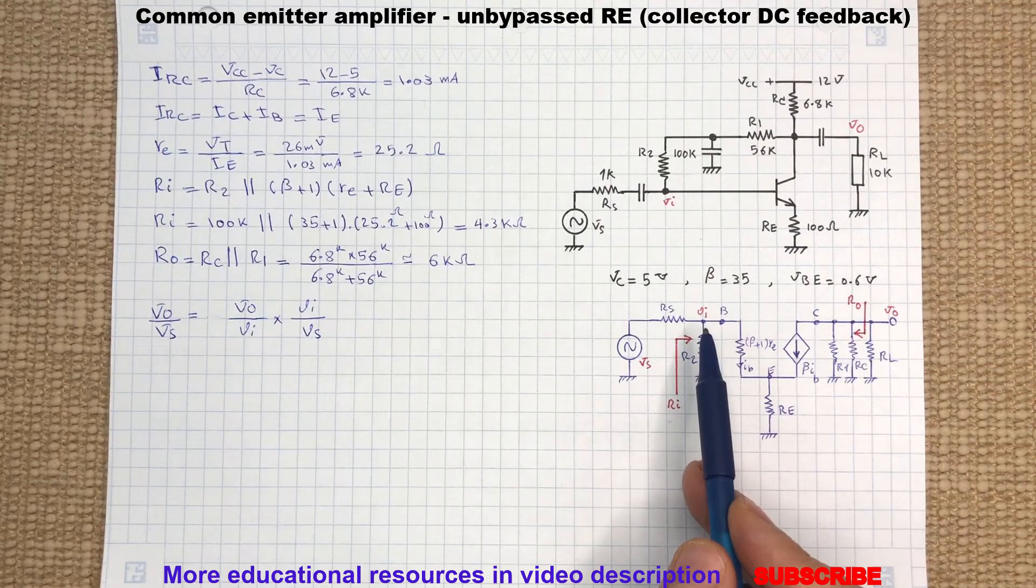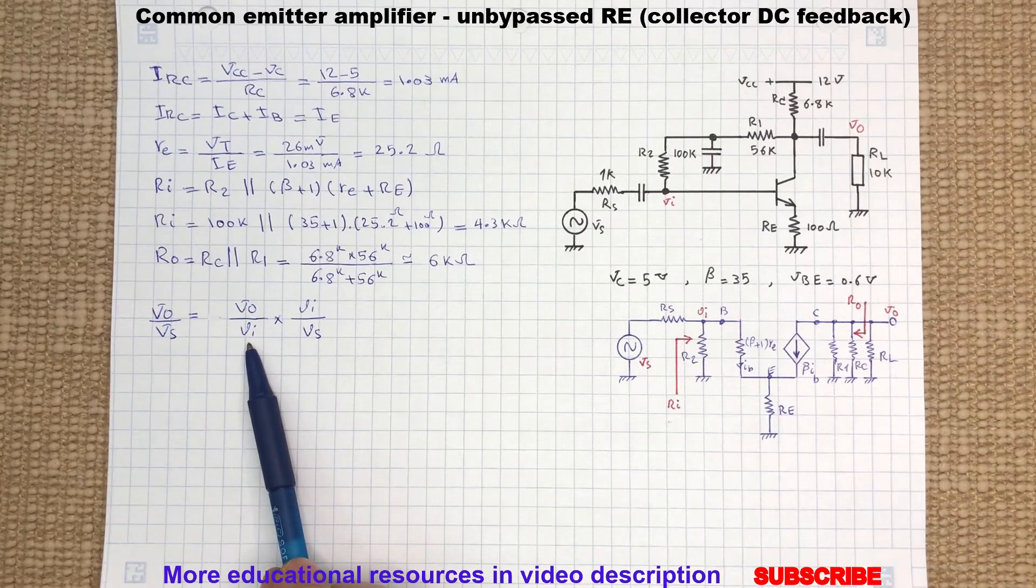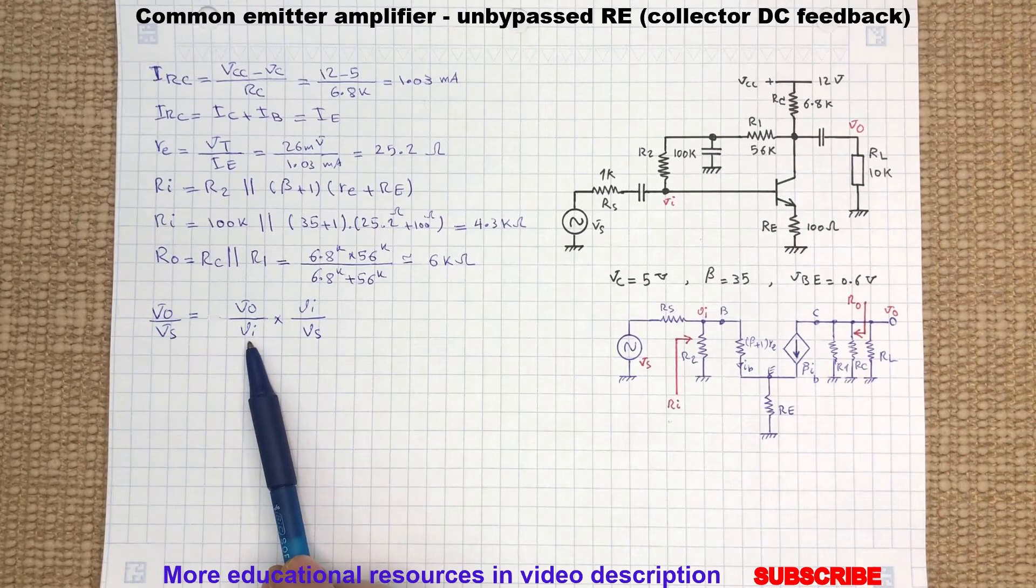Where VI is located at the amplifier input terminal. To determine VO to VI, which is the common emitter amplifier gain, we can write...